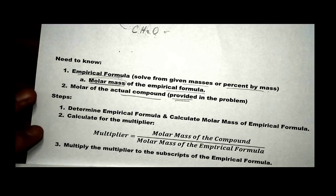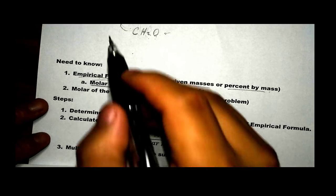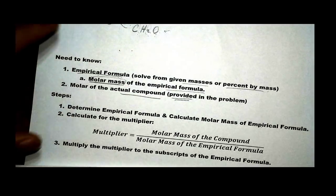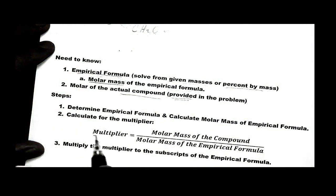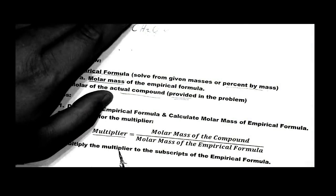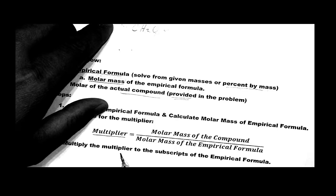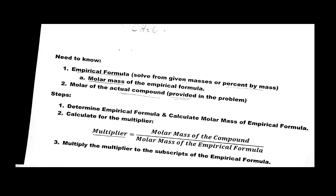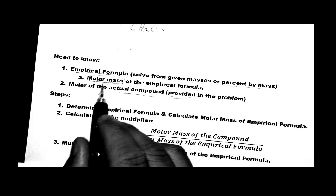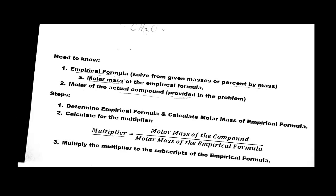The number we multiply by — in this case 6 — we call the multiplier. To get from the empirical formula to the molecular formula, we multiply by this multiplier. There is an equation for it, and it is all relative in terms of molar mass, which is why it is so important to get the molar mass.